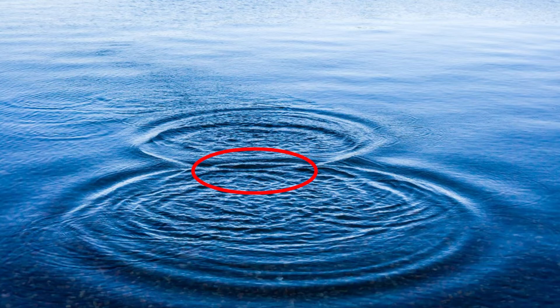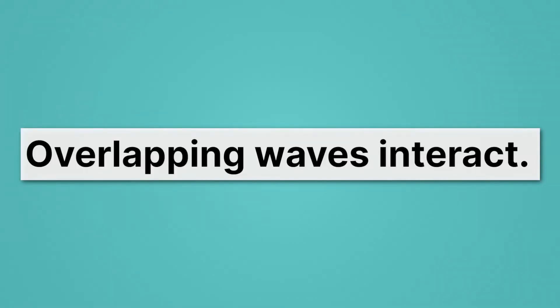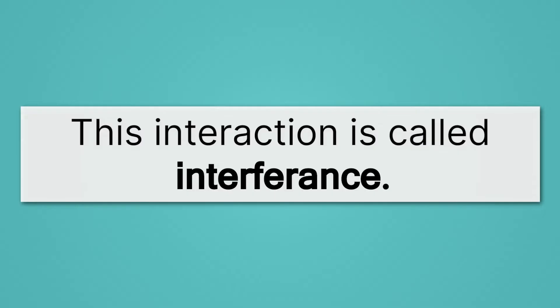What that means then is that when we don't have overlap, we don't have any interaction. But when we do have overlap, we get an interaction. Overlapping waves interact. This interaction is called interference.